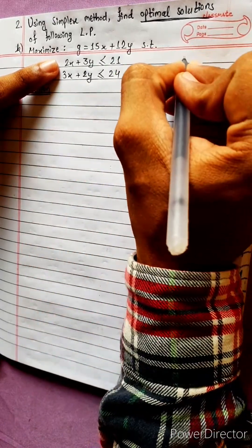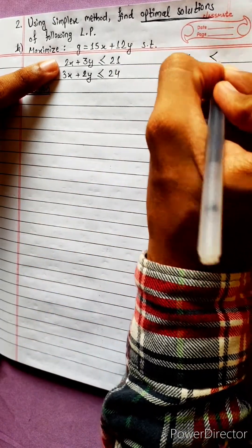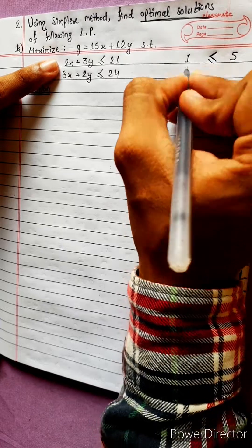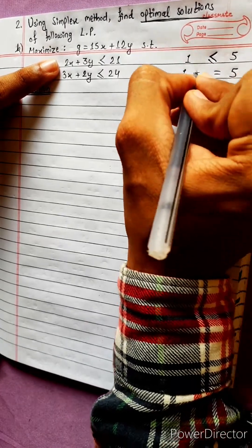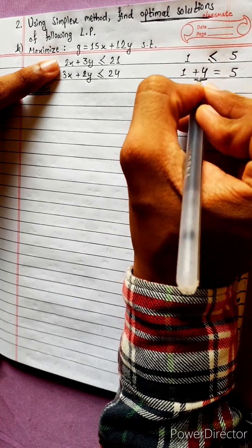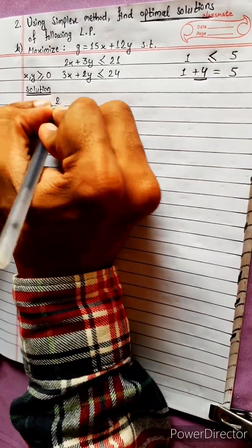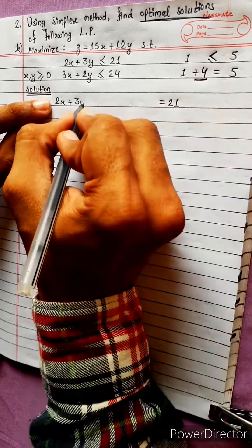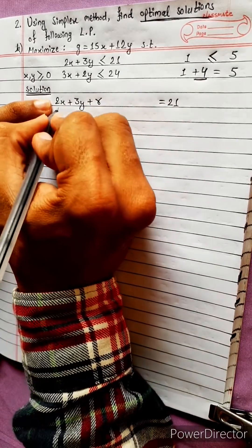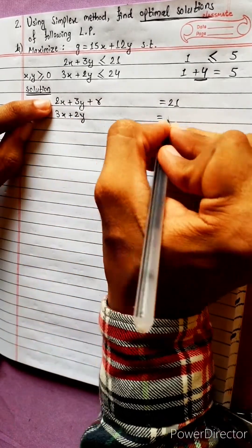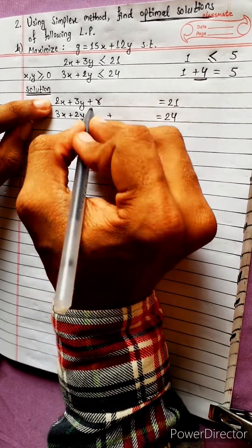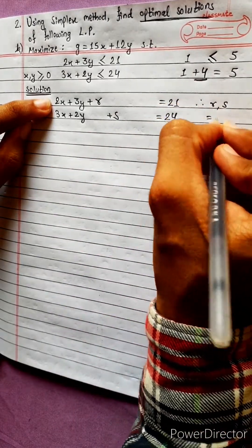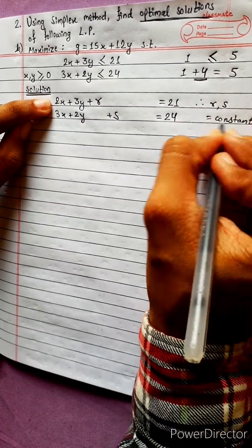Less than or equal to inequality — it's like an example. 1 is less than or equal to 5; 2 is less than or equal to 5. We introduce slack variables: 1 plus 4 equals 5, and 2 equals 3. R and S are constants, and they are called slack variables.